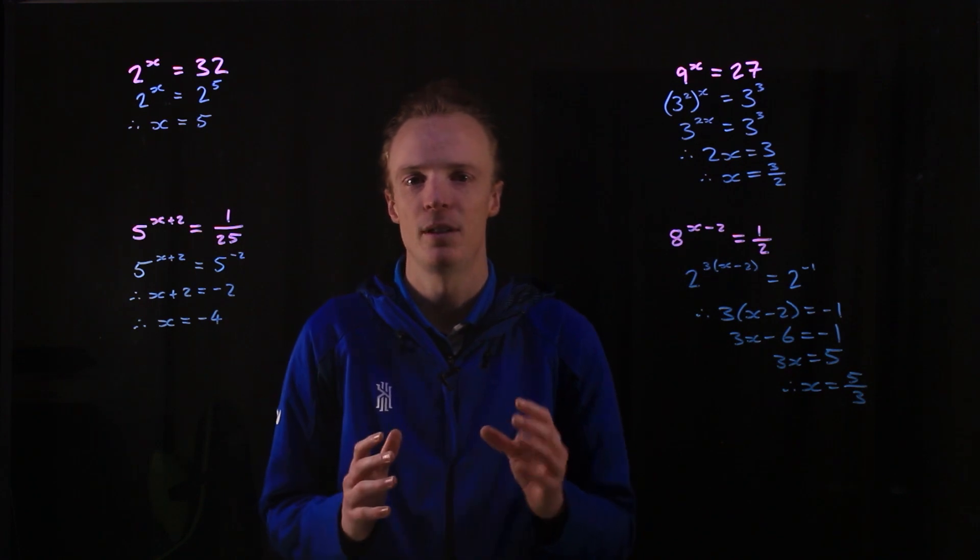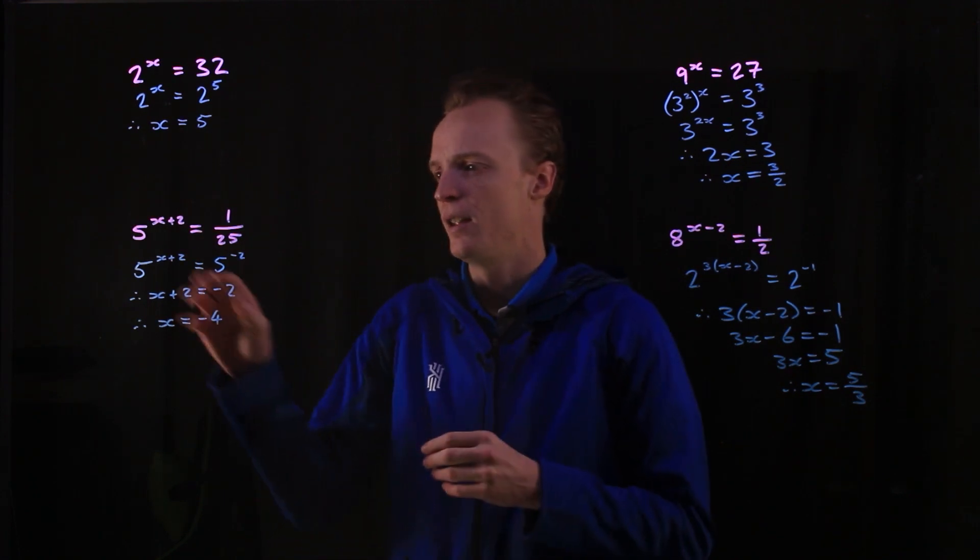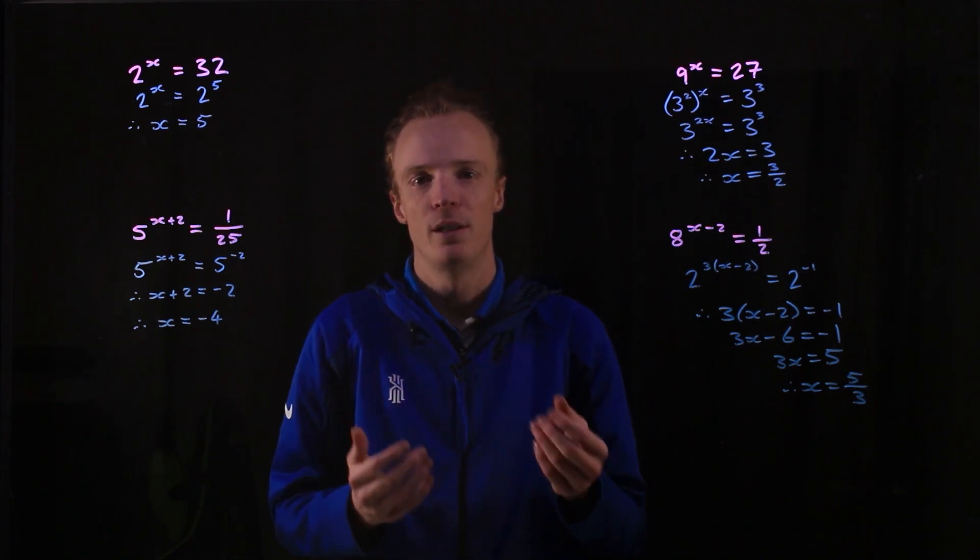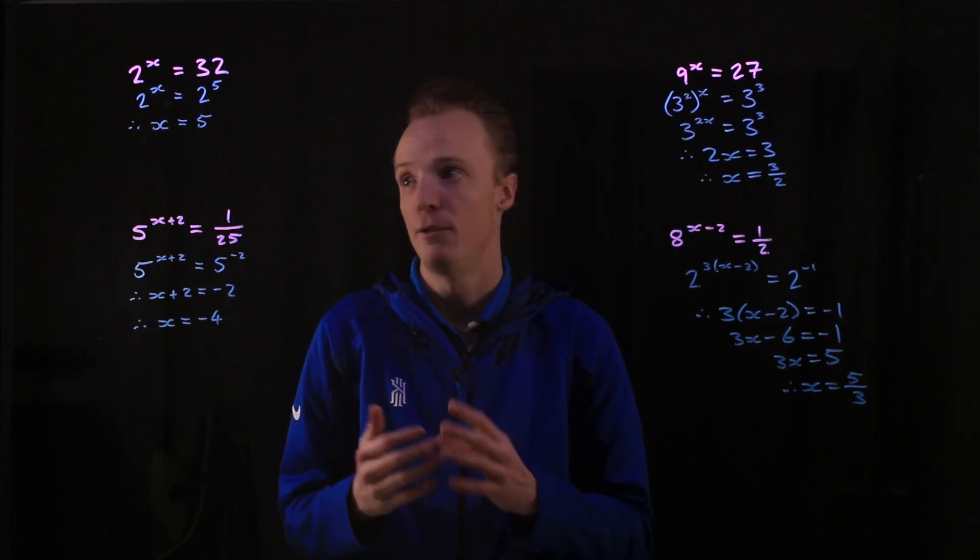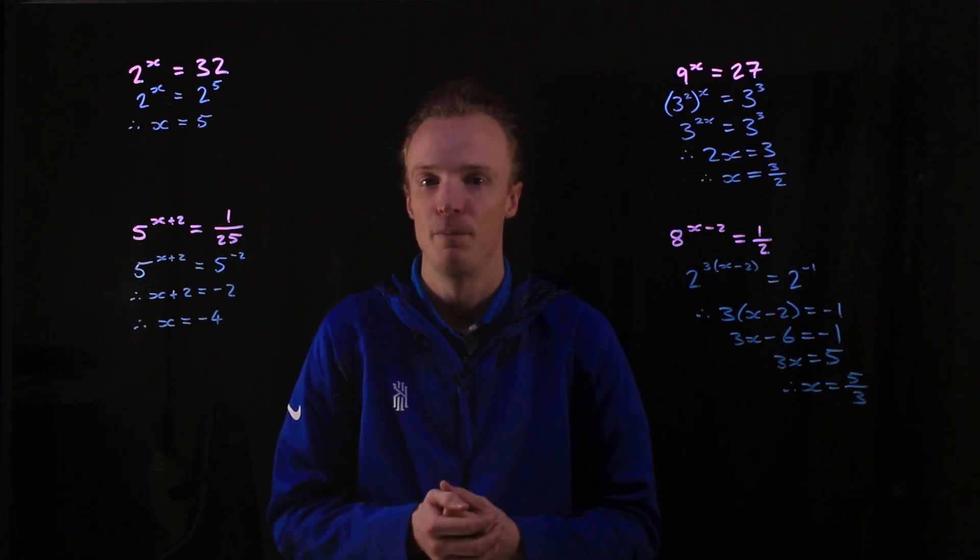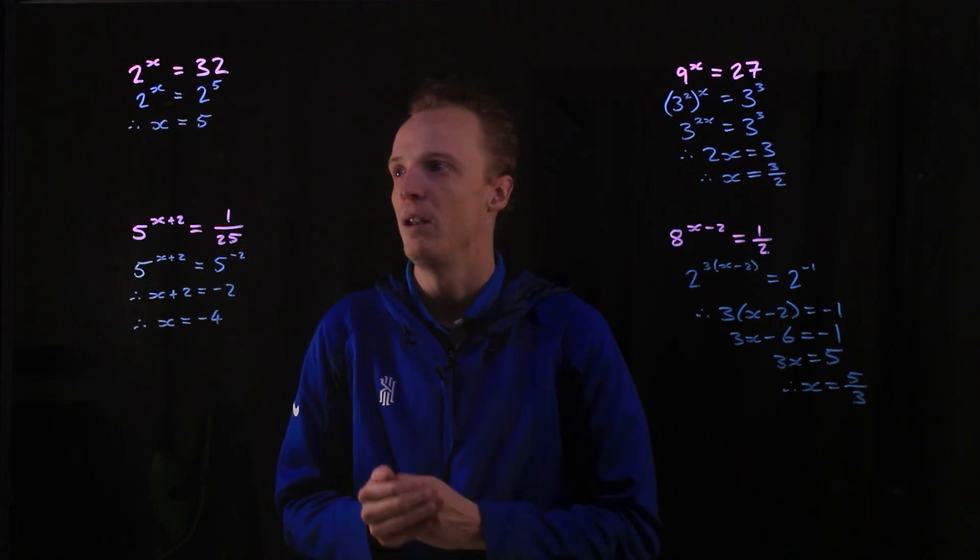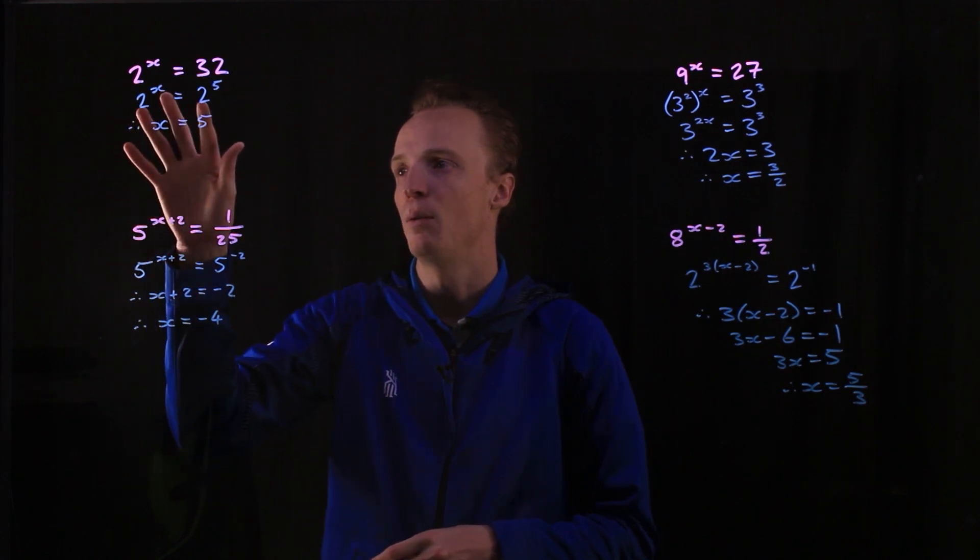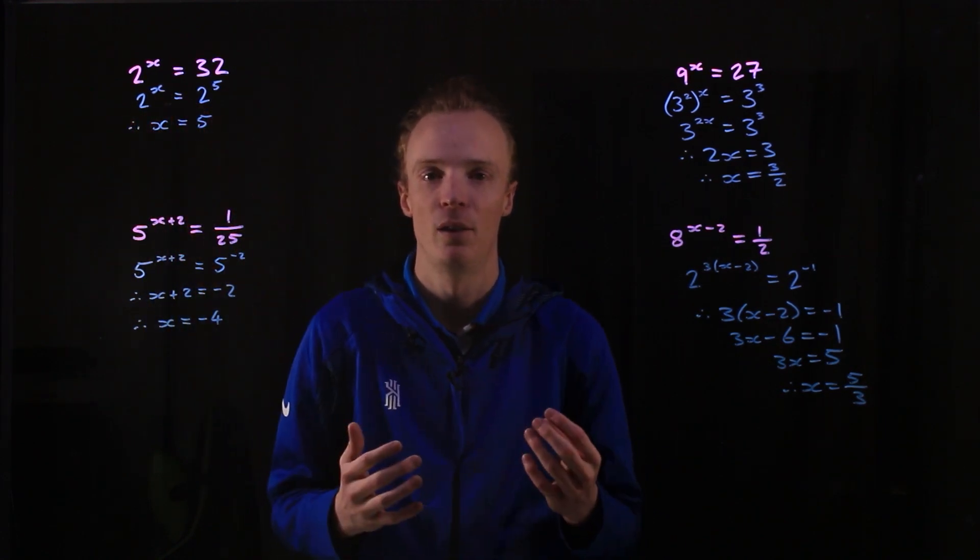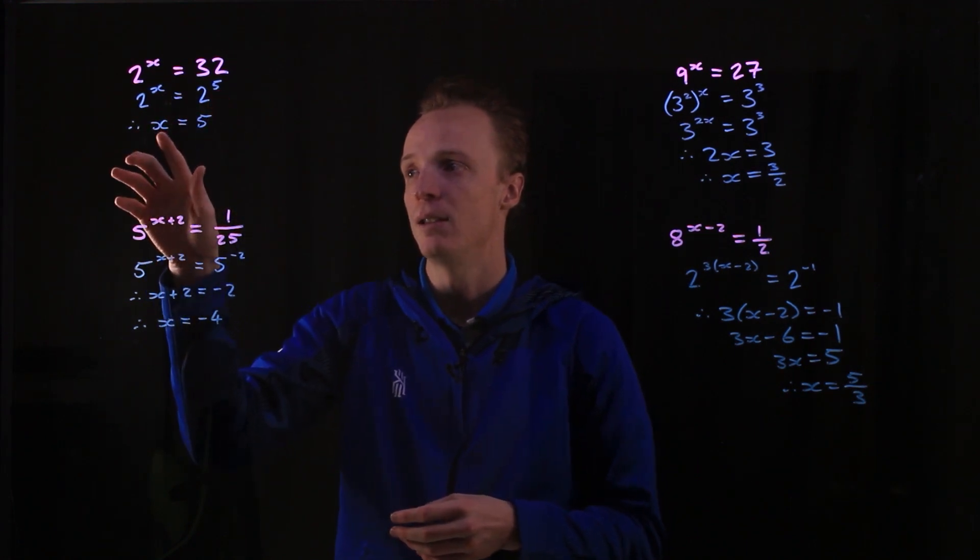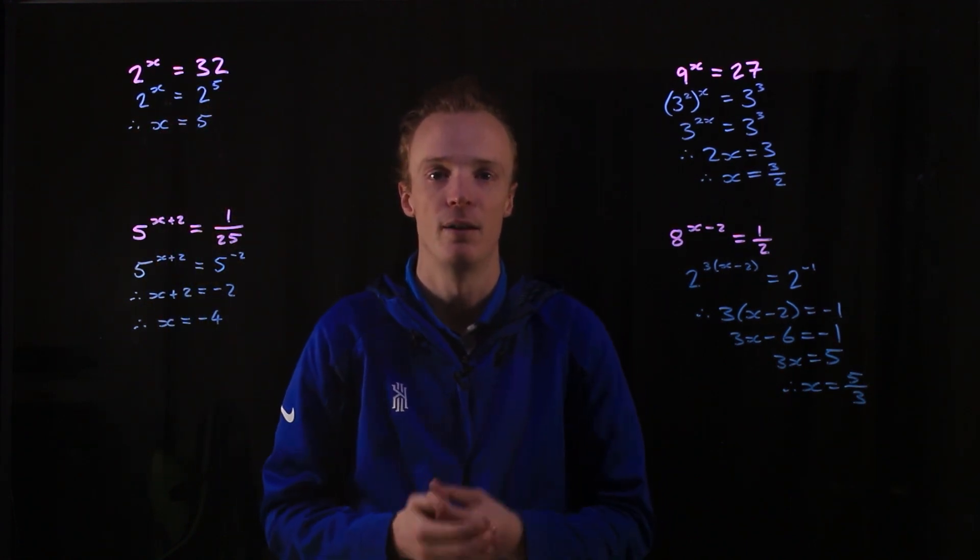So as you can see here, when we're solving equations where the exponent part of the equation is now a variable, we can use a process of equating indices to be able to find that value of the variable. Now what's important here, before we equate indices, we need to represent both sides of the equation with the same base. Once we've done that, we can state that the two indices have to be equal with each other for that to be true.